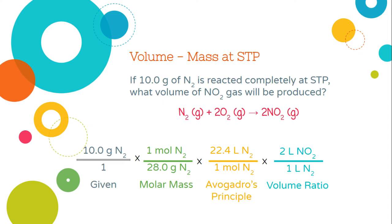But liters of nitrogen isn't what I want. So I need to use my volume ratio to get rid of liters of nitrogen, switch me to liters of nitrogen dioxide.